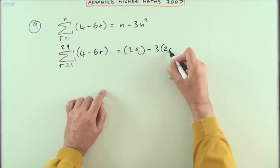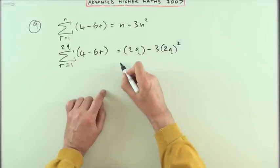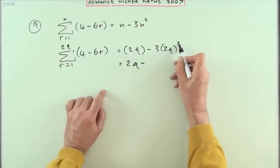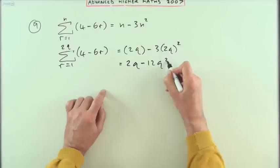I could tidy that up then into 2q minus that's 4 times 3 is 12q squared.